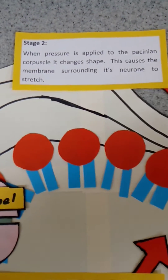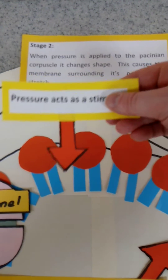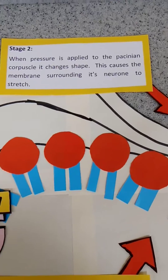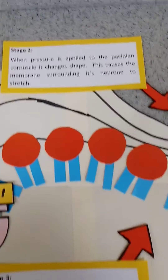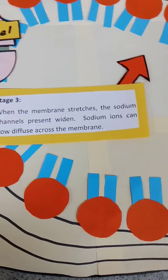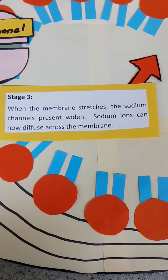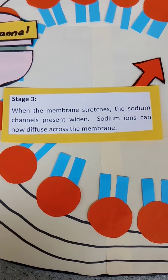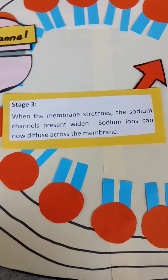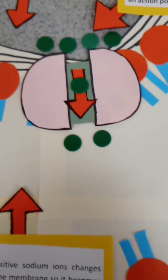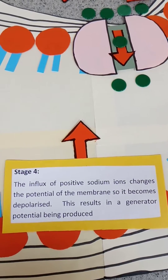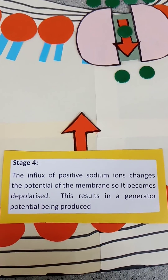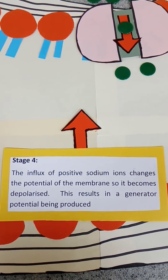When we apply some sort of pressure, that causes the corpuscle to deform and change shape. The pressure, when it changes shape, causes the stretch-mediated sodium ion channels to open up. As they open up, they're now wide enough to allow sodium ions to pass through. This influx of sodium ions causes the membrane to become depolarised.